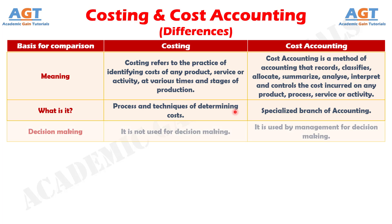Number three: costing involves classification of expenses as per the cost elements. It is concerned with the allocation of costs to the cost center and evaluating various options to reduce the cost of production. In contrast, cost accounting information is used by the management in important decision making with respect to the production planning, method, technique, resources and so forth.